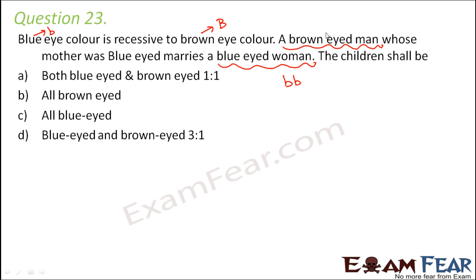The man's mother was blue-eyed, meaning her genotype was bb. She would have contributed one small b allele to the man. Therefore, the man's genotype must be Bb — he inherited one recessive b from his blue-eyed mother and expresses brown eye color from his dominant B allele.